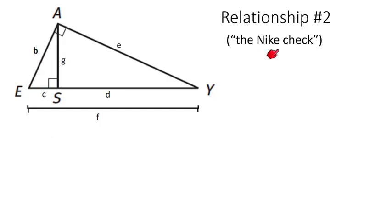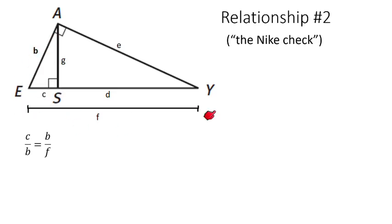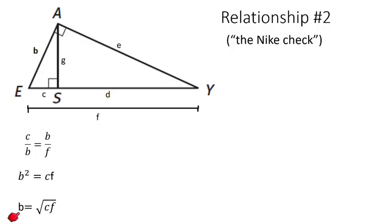Now let's look at our second relationship — I call this one the Nike check. We've got another proportional relationship: C over B equals B over F, this whole side. If you cross-multiply, B times B gives B squared and C times F gives CF. Taking the square root of both sides, B equals the square root of CF. So B is the geometric mean of C and F. Again, I tend to operate more from the proportion, because the proportion leads you to the geometric mean relationship.